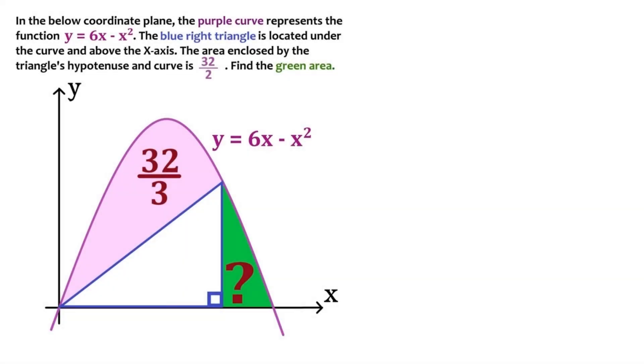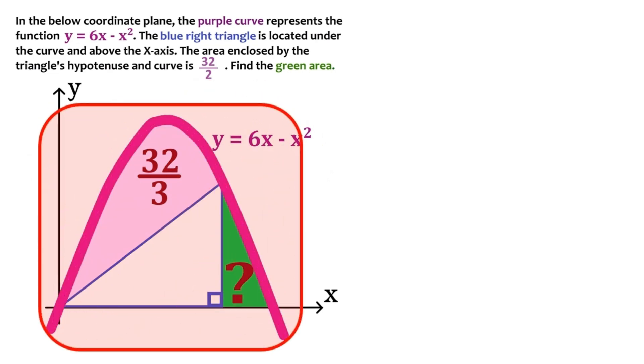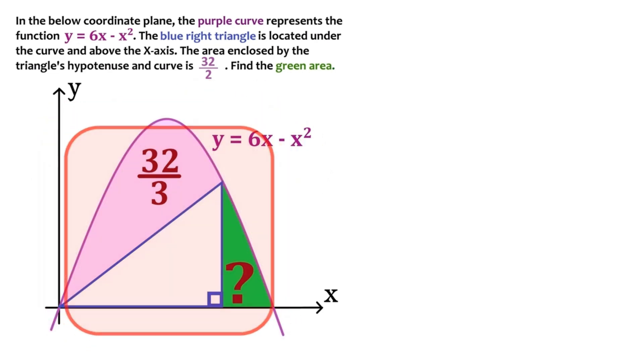In this extremely fun analytical geometry problem, we've got this cool function shown by this purple curve on the coordinate plane. And this blue right triangle is crammed under the curve like this, creating this weird shape with an area of 32 over 3. And we are asked to find the area of this little green region down here.